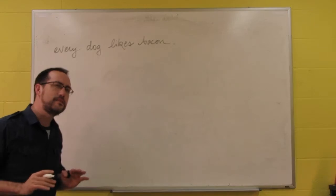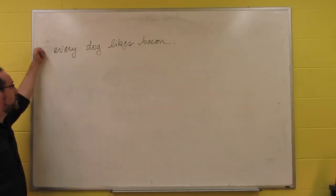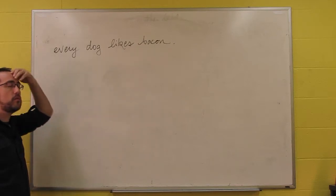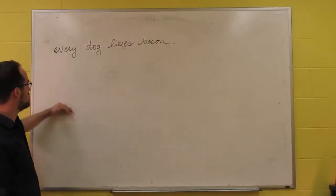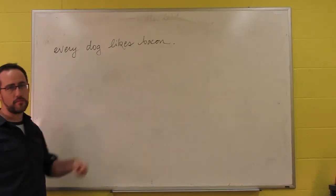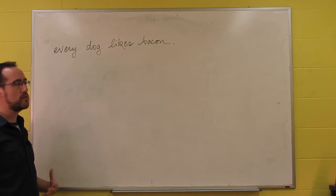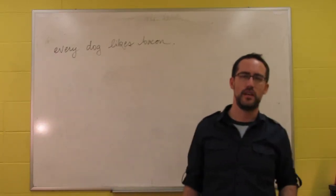Let's take a sentence like this: every dog likes bacon. This is true or false, but what would make it true? If we looked at every dog and said, does that dog like bacon, and so forth, we go down the list, and if all of them like bacon, then we're good to go.